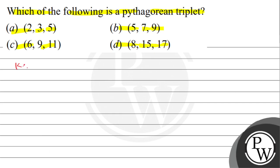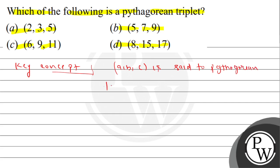So here we know the concept of a Pythagorean triplet. A, B, C is said to be a Pythagorean triplet if a squared plus b squared equals c squared.